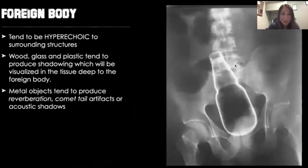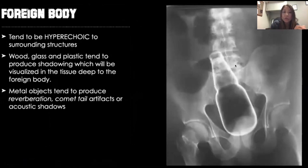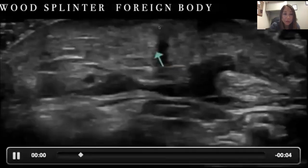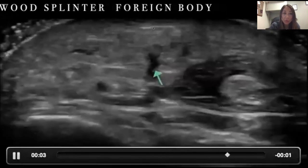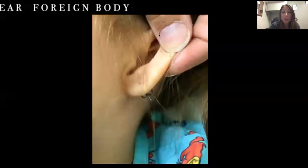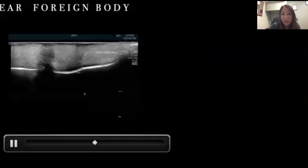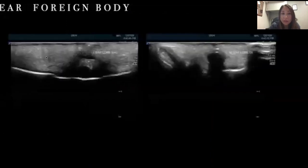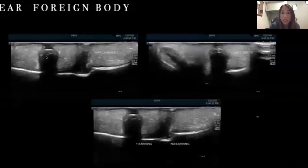Foreign bodies are a lot of fun to diagnose on ultrasound. They tend to be hyperechoic relative to surrounding structures. You can look for objects such as wood and glass — they'll sometimes cause shadowing deep to the foreign body. Metal objects cause reverberation or comet tail artifacts. This is an example of a wood splinter where you see the shadowing, and right above the arrow you can see the piece of foreign body. We had a patient with an earring embedded into the earlobe — the metal caused a reverberation artifact, and you can see how deep it is and use ultrasound to help extract it.